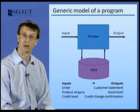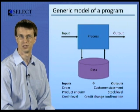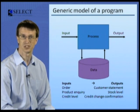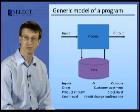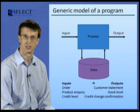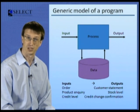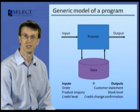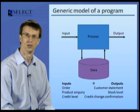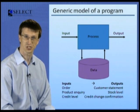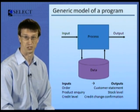The arrow on this diagram to the right of the process is labelled output — the entire raison d'etre for the program: to produce some information that is of value to the business. This could be a statement to be sent to a customer, the quantity of available stock of an item held in stores, or confirmation of a change to a customer's credit limit. It's whatever we want it to be.